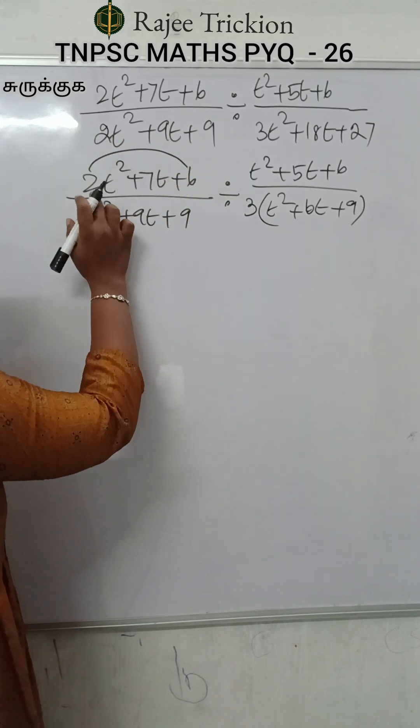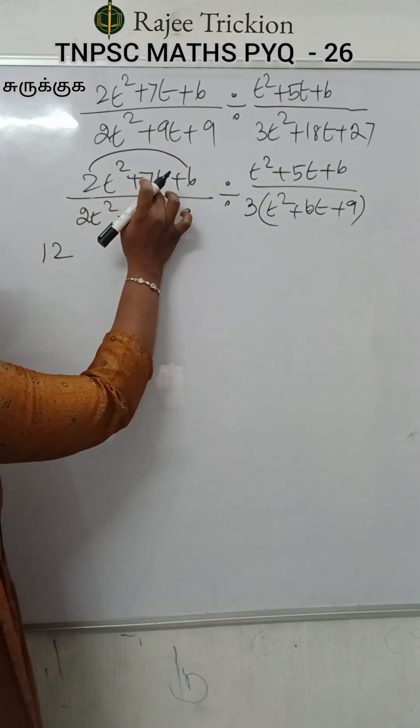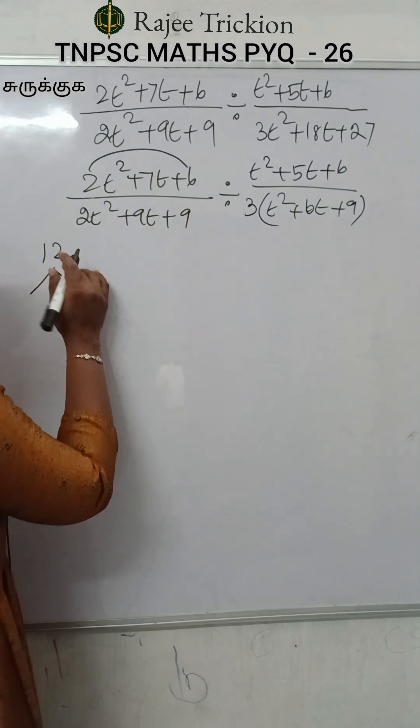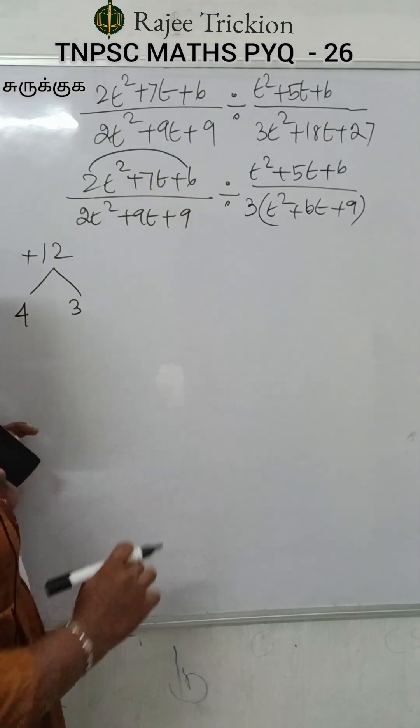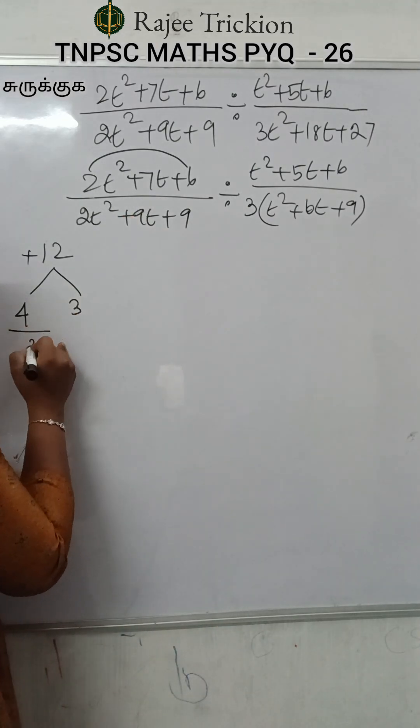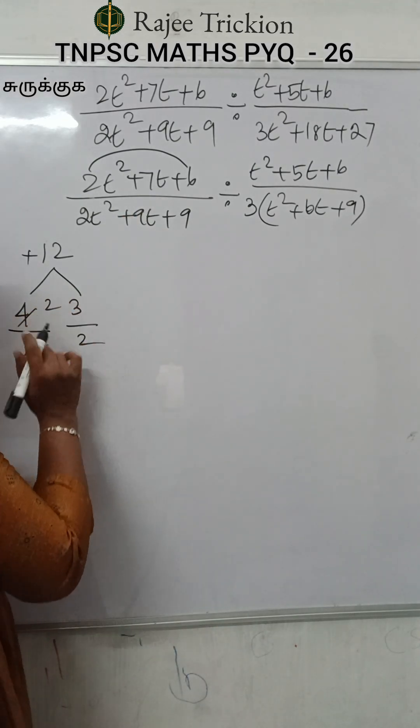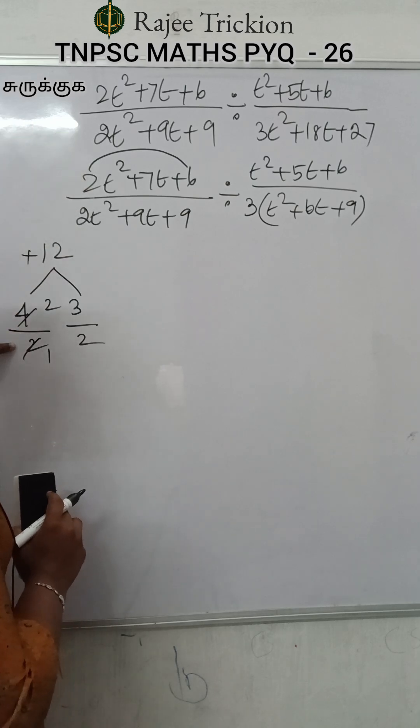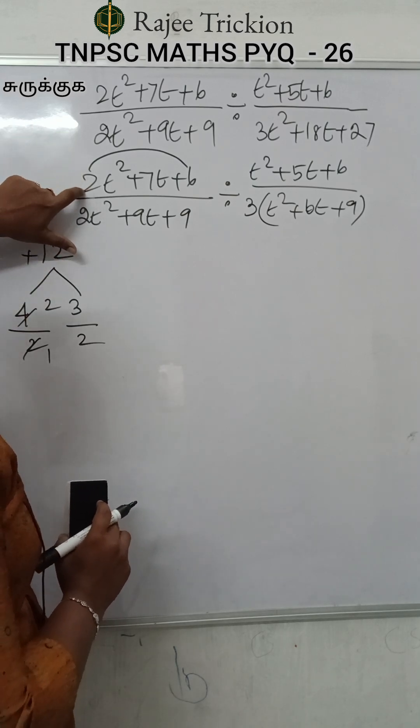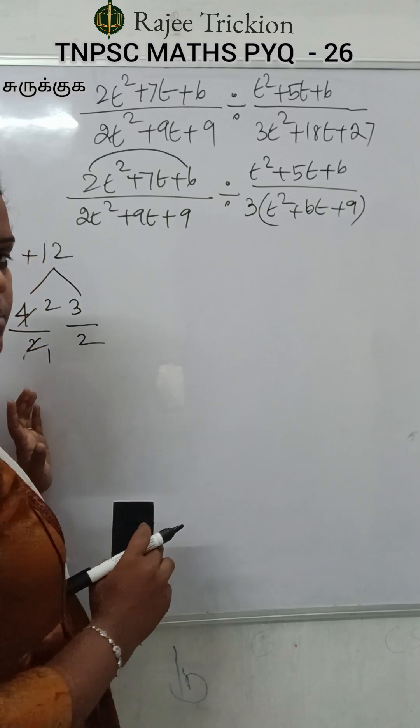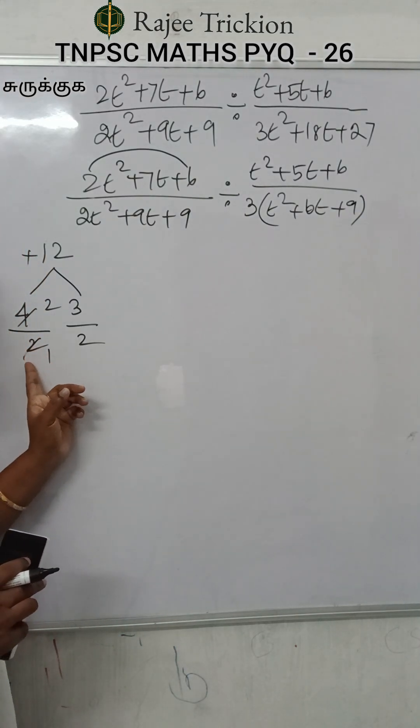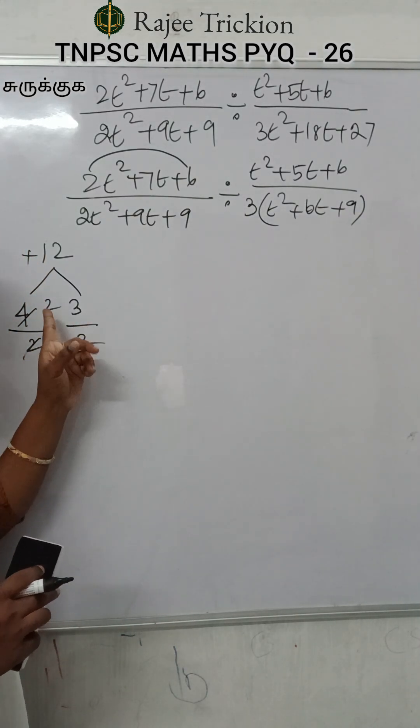The coefficient is - how do we need to add? The multiplication is plus 12. What do we need to add to get 7? Take the t coefficient. Three will be multiplied to the numbers. Let's take the t coefficient and cross divide. One, two, two, four.